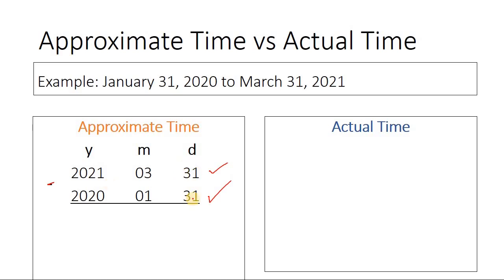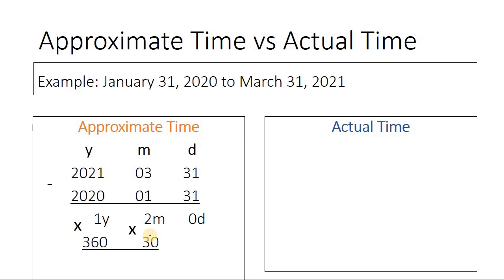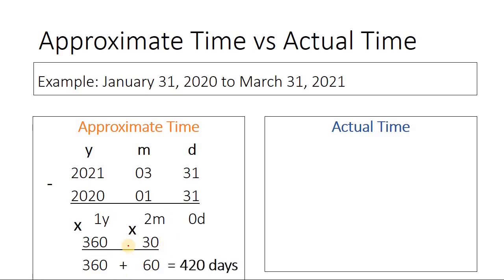We take the difference. 31 minus 31 is 0. 3 minus 1 is 2. And 2021 minus 2020 is 1. So we have 1 year, 2 months, and 0 days. 1 year should be multiplied by 360, and 2 months should be multiplied by 30 days. The result is 360 and 60. So we have 1 year as 360 and 2 months as 60 days. We take the summation and this would be 420 days. So the approximate time from January 31st, 2020 to March 31st, 2021 is 420 days.